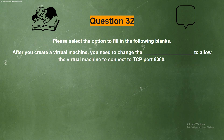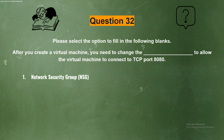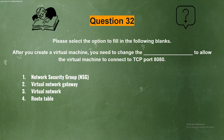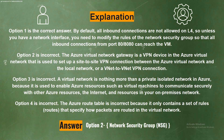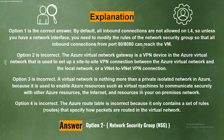Next question. Please select the option to fill in the following blank. After you create a virtual machine, you need to change the blank to allow the virtual machine to connect to TCP port 8080. The correct answer is Option 1, Network Security Group (NSG). By default, all inbound connections are not allowed at Layer 4, so unless you have a network interface, you need to modify the rules of the Network Security Group so that all inbound connections from port 8080 can reach the VM.